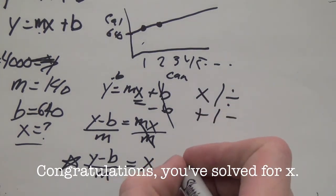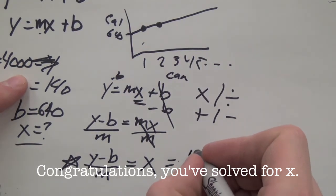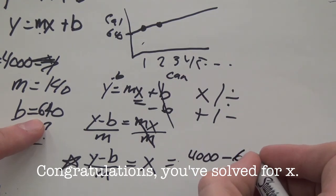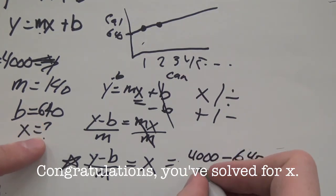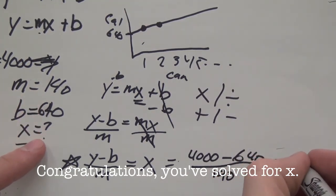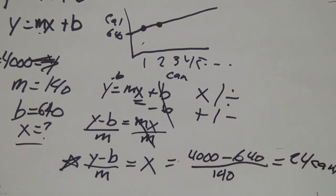Now I'm going to rewrite this. X equals Y, which is 4,000 calories, minus B, which is the starting point — we started with 640 calories of donuts — and divide it by the slope, which is 140. This will equal 24 cans. You have to consume two cases of Dr. Pepper to drink your calories, which I feel is the leading cause of teenage obesity — drinking your calories. So watch out.